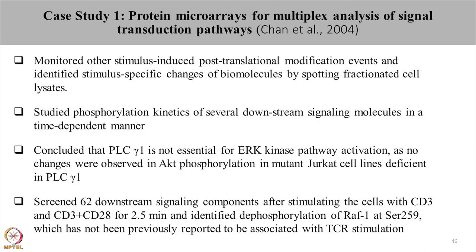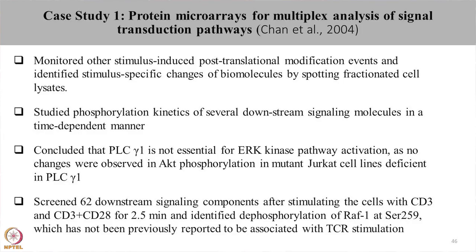To conclude, Chan et al. studied time-dependent phosphorylation kinetics of several downstream signaling molecules. They concluded that PLC gamma 1 is not essential for the ERK kinase pathway, as there was no change seen in the phosphorylation of AKT in cells deficient in phospholipase C protein. They also screened the phosphorylation level of 62 downstream signaling proteins and identified a novel instance where RAF1 showed dephosphorylation upon T cell receptor stimulation.